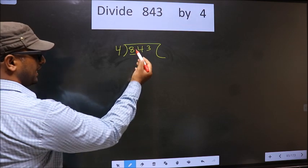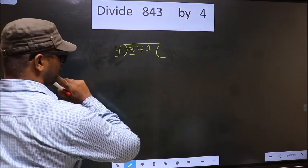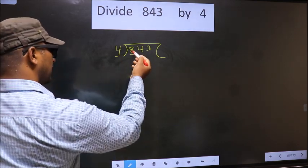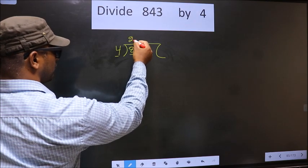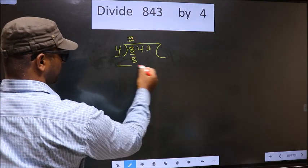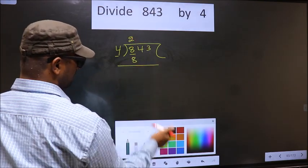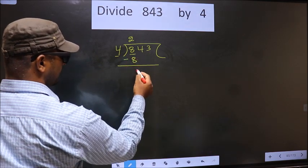Now, here we have 8, here 4. When do we get 8 in 4 table? 4 twos, 8. Now, you subtract 8 minus 8, 0.